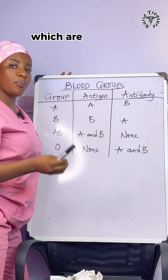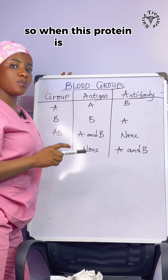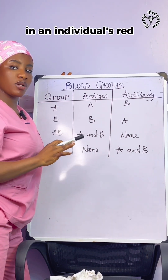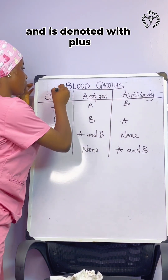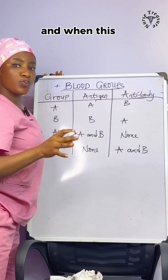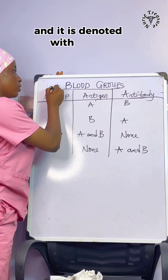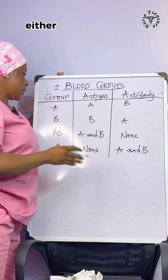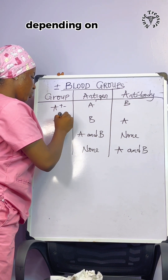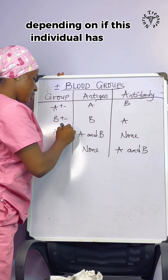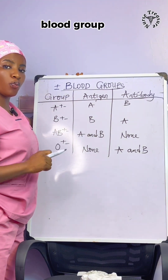But let's go deeper. When it comes to blood groups, there's what we call the rhesus factor — proteins found on the surface of the red blood cell. When this protein is present in an individual's red blood cell, the person is said to be rhesus positive, denoted with a plus. When this protein is absent, the person is said to be rhesus negative, denoted with a minus. Either of these blood groups can be positive or negative depending on whether this protein is present or absent.